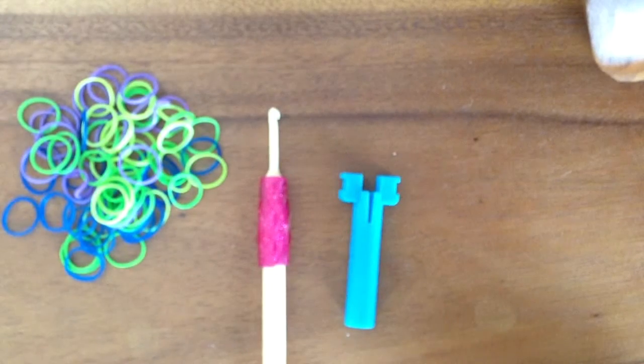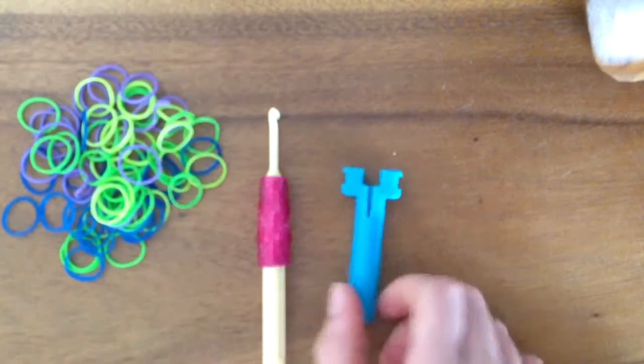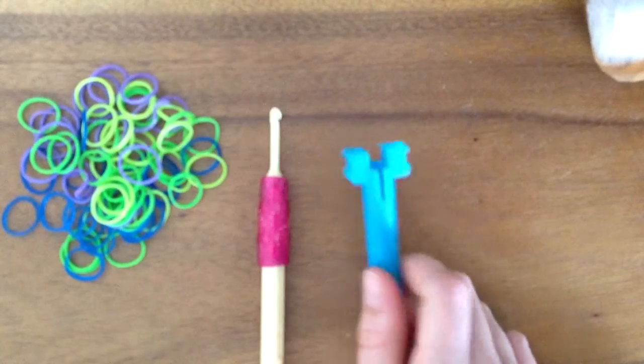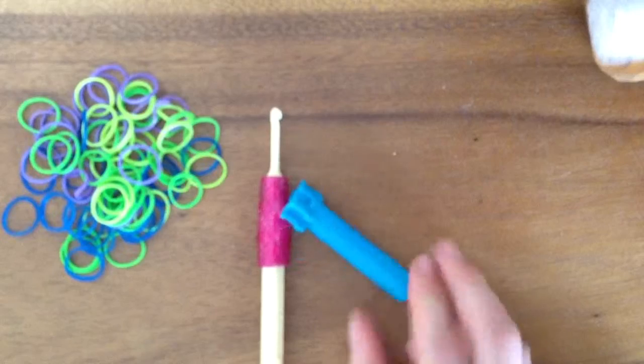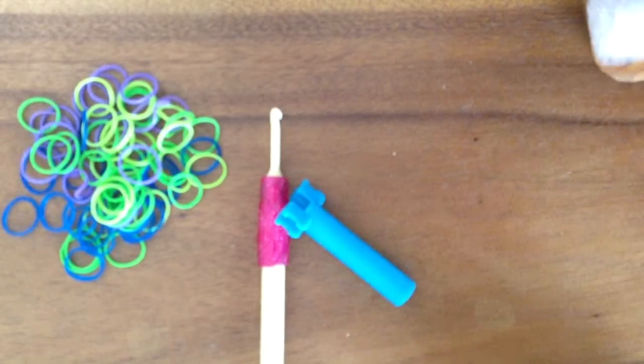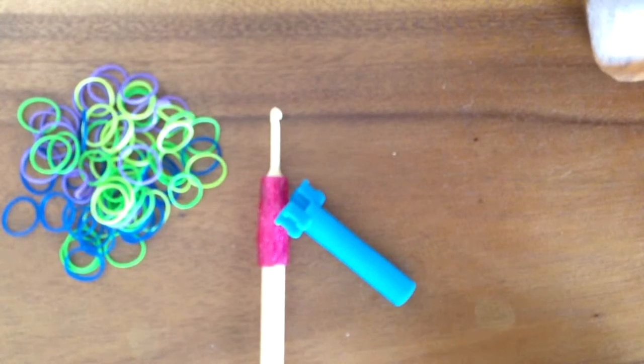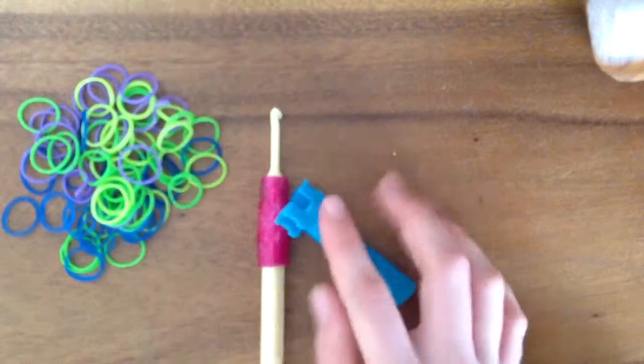You can make the rainbow loom fishtail on many things: your fingers, your two fingers, the mini loom, you could use it with your loom, you could do it on a lot of things, even chopsticks or a fork.